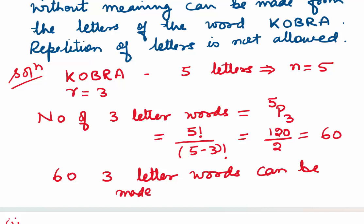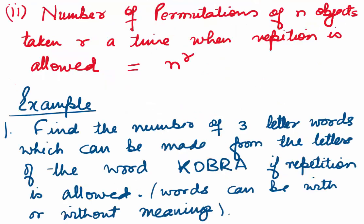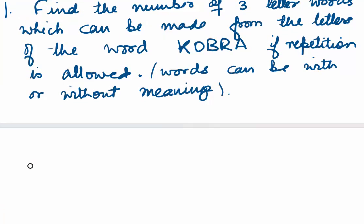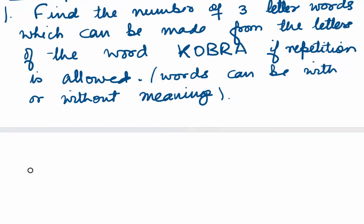Now let's come to the second case: where repetition of things is allowed. If repetition of objects is allowed, the number of permutations of n objects taken r at a time is given by n to the power r (nʳ).